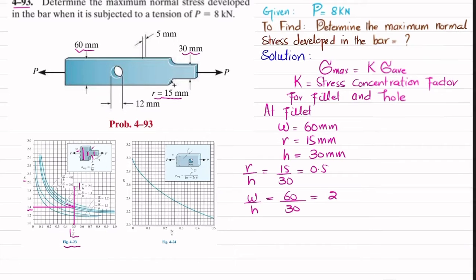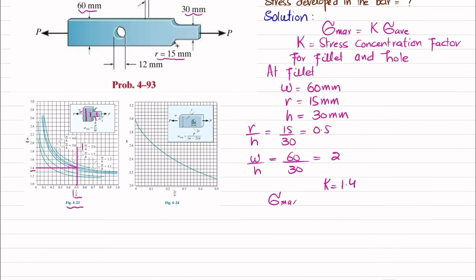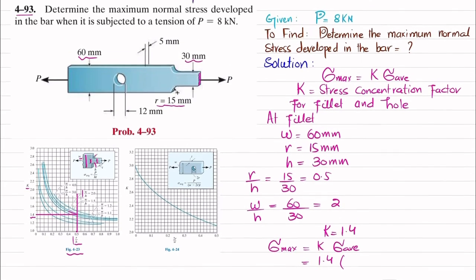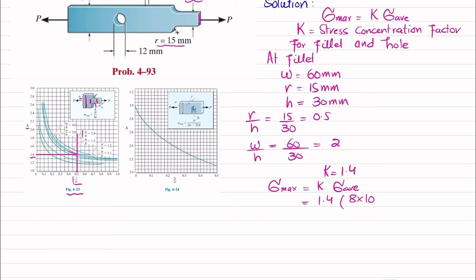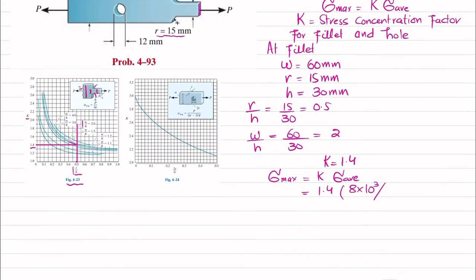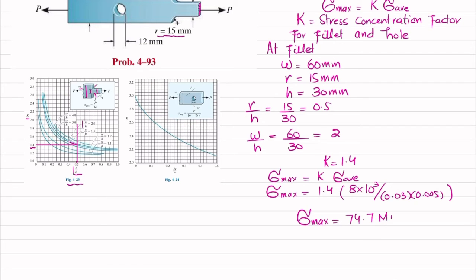With k = 1.4, we compute sigma_max = k × sigma_average = 1.4 × (8 × 10³ N) / (0.03 m × 0.005 m), where 30 mm is the reduced height h and 5 mm is the thickness. Solving this gives a maximum stress due to the fillet of 74.7 MPa.